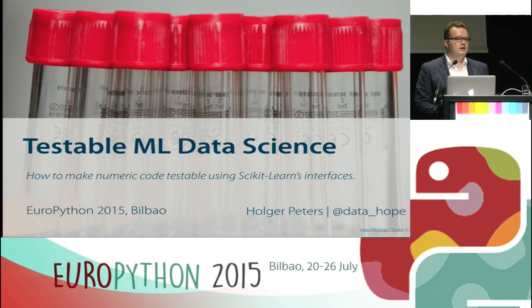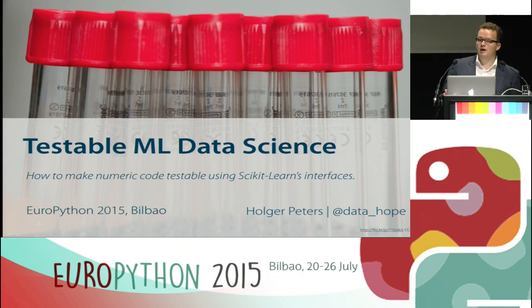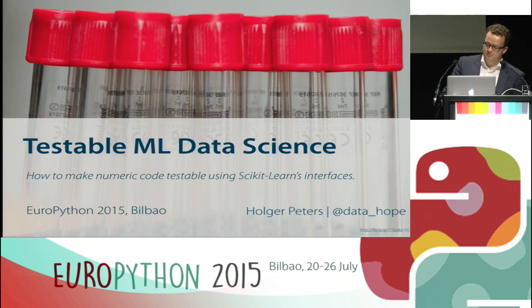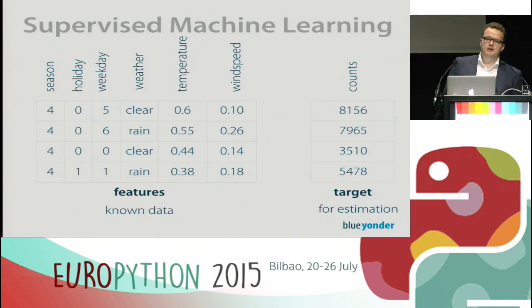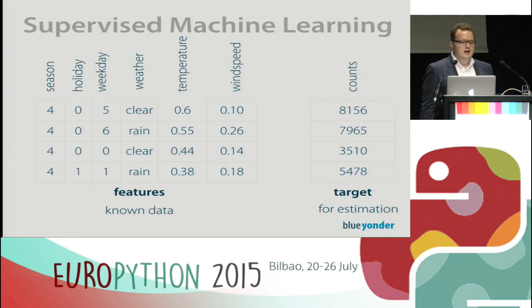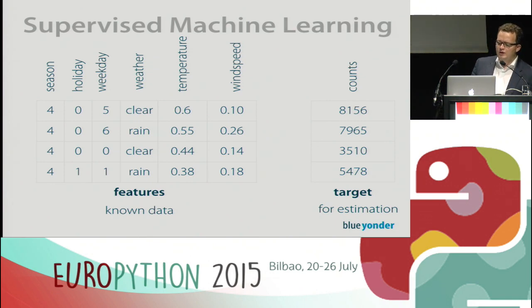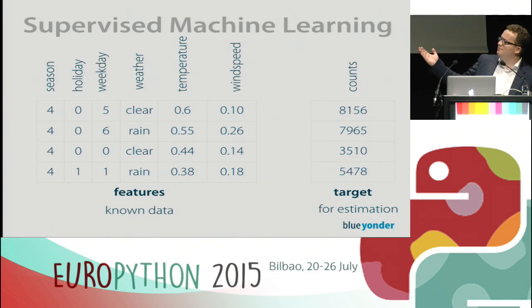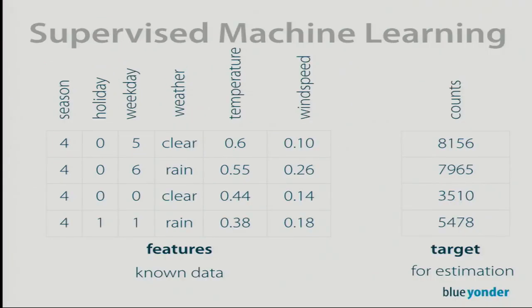For those who might not know, scikit-learn is probably the most well-known machine learning package for Python — it's a great package with all batteries included. The problem I'm talking about is that of supervised machine learning. Imagine a table with data: we have a season column — spring, summer, fall, winter — and a binary variable encoding whether a day is a holiday or not. Each row is a data point and each column is a feature.